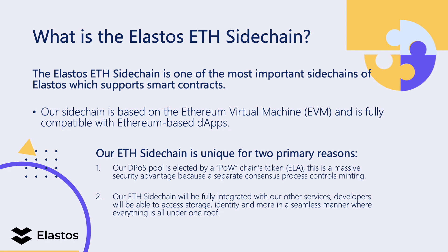The other reason we're unique is that our Ethereum sidechain will be fully integrated with our other services. Developers will be able to access storage, identity, and more in a seamless manner — everything under one roof. Currently, DApp developers have to piece together different services and tools for things like storage and identity, resulting in a fragmented DApp with different libraries and complexity. With Elastos, we have a very good interface and API for DIDs, storage with Hive, Carrier for communication, and Elastos applications as well.